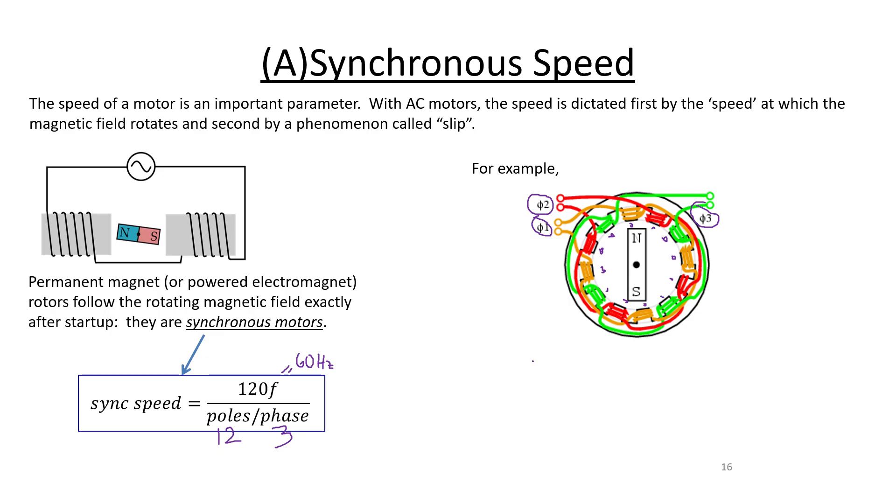So for this one, the synchronous speed is 1,800 rpm revolutions per minute. Okay, so depending on the frequency that you're feeding to your AC motor, and depending on the number of poles that you constructed in your AC motor, and the number of phases that you're feeding into your AC motor, you know what the synchronous speed is. So for a synchronous motor, the rotor speed matches the speed of rotation of the magnetic field around the stator.